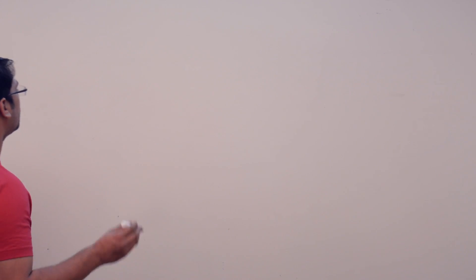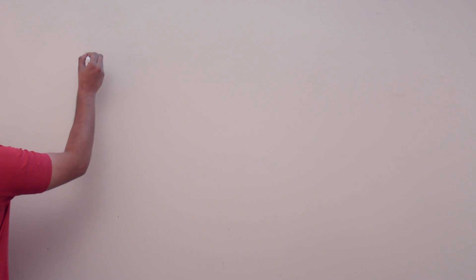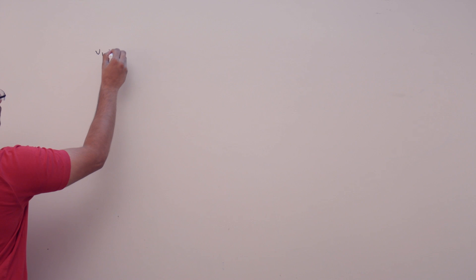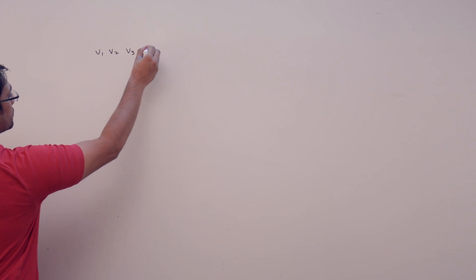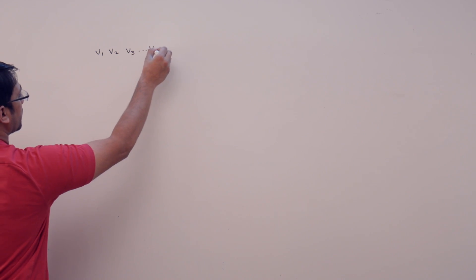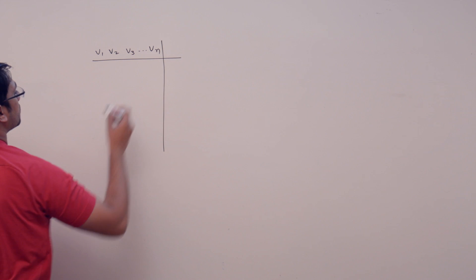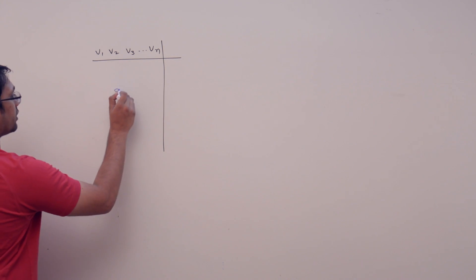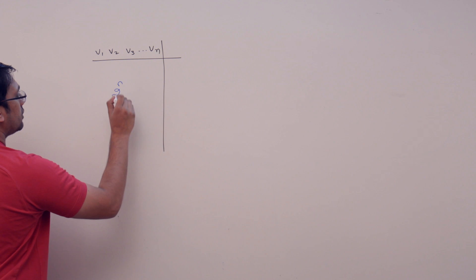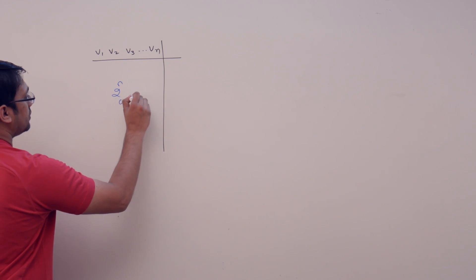Let us look at the previous question in a different manner. If we have n variables — v1, v2, v3, up to vn — then for these n variables, 2 raised to power n different combinations are possible.